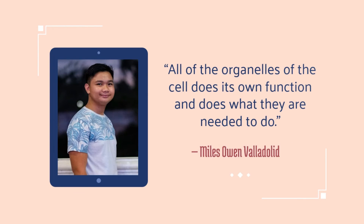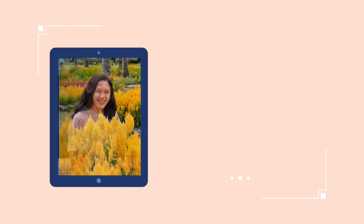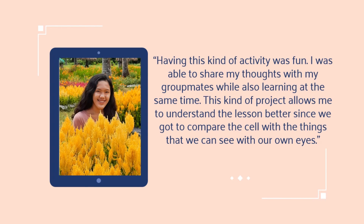What I have learned from the group activity is that all of the organelles of the cell do their own function and perform what they are needed to do. If one organelle disappears, the cell will not fulfill its function to a tissue, an organ, or an organ system of an organism. The cell can be compared to an amusement park because all of the parts of the park can be represented by an organelle, and that specific part does its own function. Having this kind of activity was fun — I was able to share my thoughts with my group mates while also learning at the same time. This kind of project allows me to understand the lesson better since we got to compare the cell with things we can see with our own eyes.